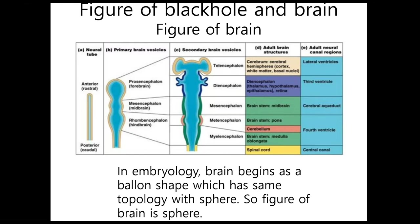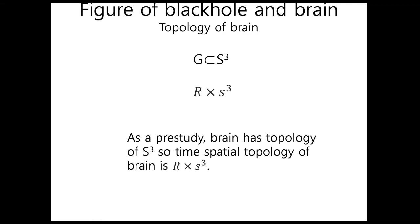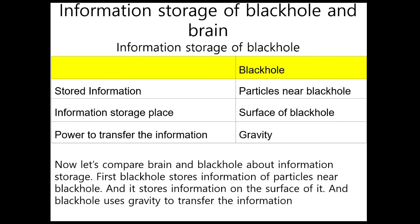Now we will see the figure of the brain. The figure of the brain is a sphere, and the surface topology of the brain is S3. In embryology, the brain begins as a polo shape which has the same topology as a sphere. So the figure of the brain is a sphere. As a pre-study shows, the brain has a topology of S3, so the spatial-temporal topology of the brain is R multiplied by S3.